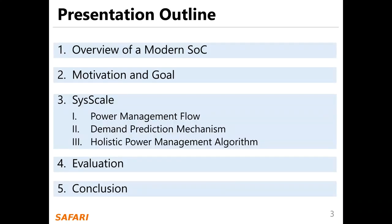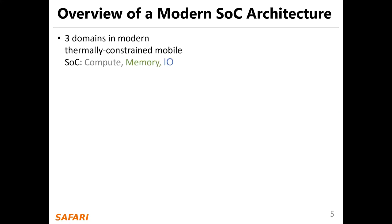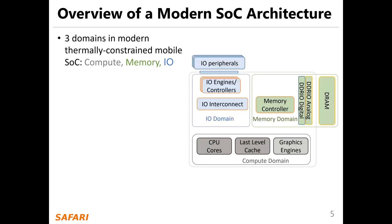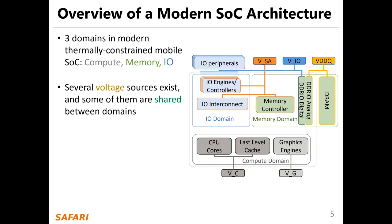Here is the outline of the talk today. I will begin with a brief overview on mobile SoC. There are three domains in modern thermally constrained mobile SoC: compute domain, memory domain, and IO domain. Several voltage sources exist and some of them are shared between domains. For example, VDDQ, VIO, VSA, V-Core, and V-Graphics.